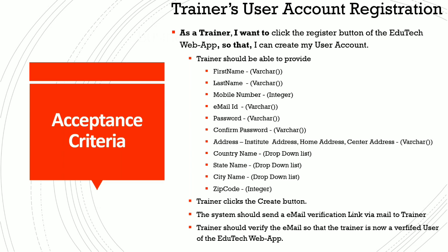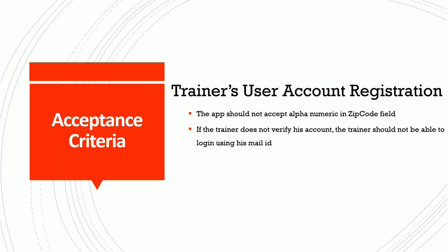The next acceptance criteria for the particular module is: when the trainer clicks the create button, the system should send an email verification link via mail to the trainer. The trainer should verify the email ID so that the trainer is now a verified user of the EduTech web app. The app should not accept alphanumeric values in the zip code field. If the trainer does not verify his account, the trainer should not be able to log into his account.